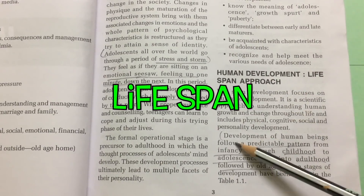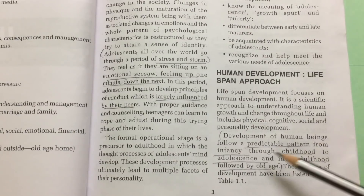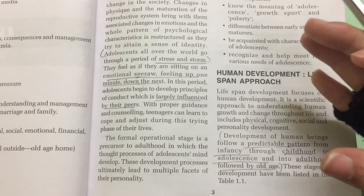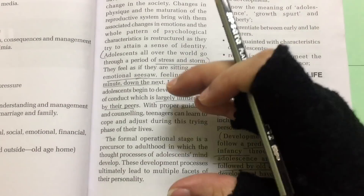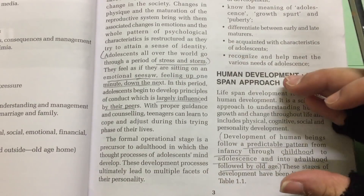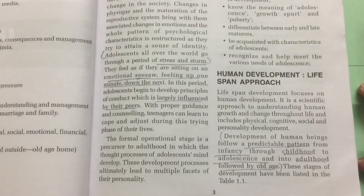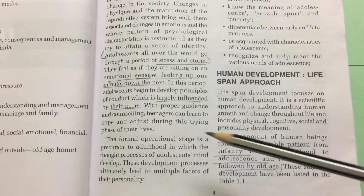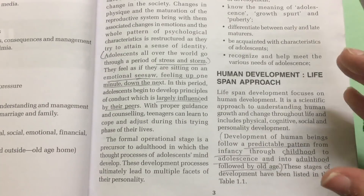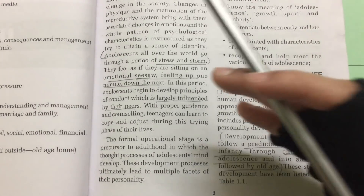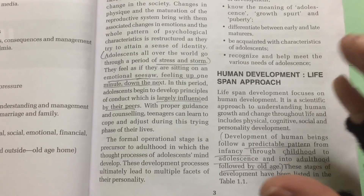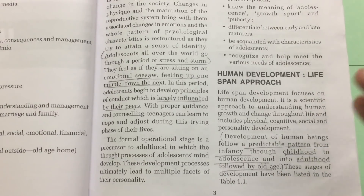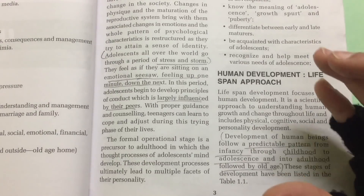Lifespan is a very predictable development of human beings. A child is an infant, then a child, then adolescence, then adulthood. All of these predictions are under a time period, and they are very predictable.